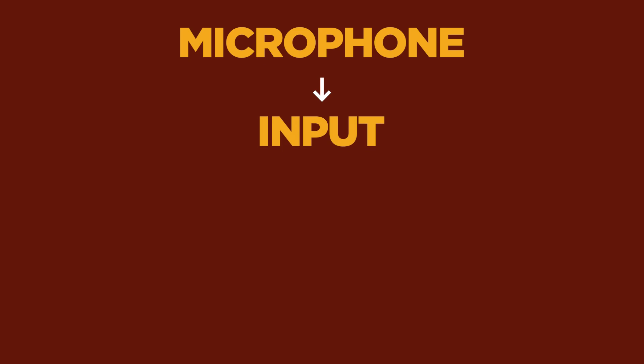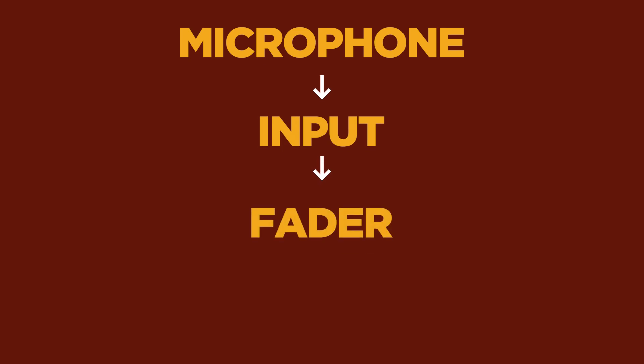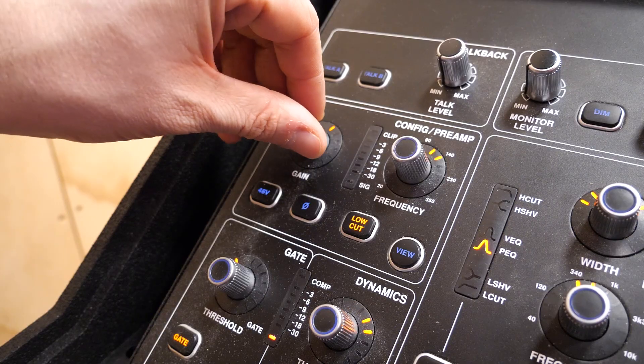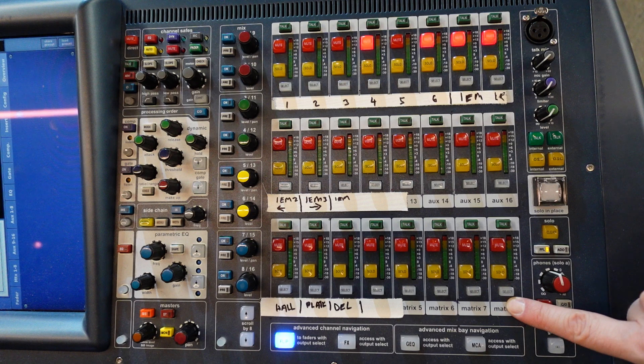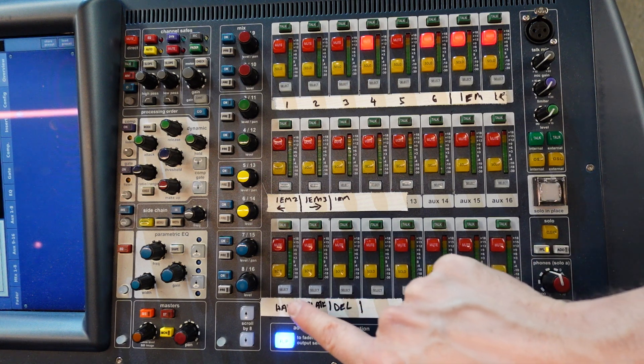Your microphone goes into the input, it goes to the fader, you turn the fader up, it goes to the master, and then you turn the master up and it comes out of the master output. As long as you know how to turn the gain up and unmute the channel, you can get sound out of the master. Even with matrices and buses, there are buttons on every fader — it's pretty straightforward.